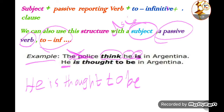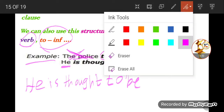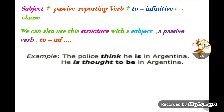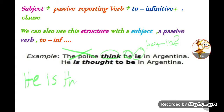'He is thought to be in Argentina.' Let me go back and review step by step. First step: take the subject from the second clause. The subject in the first clause before the reporting verb is ignored. Then look at the reporting verb — 'think' is present, so we use 'is thought'. Then for the second part, use 'to infinitive': 'to be in Argentina.'